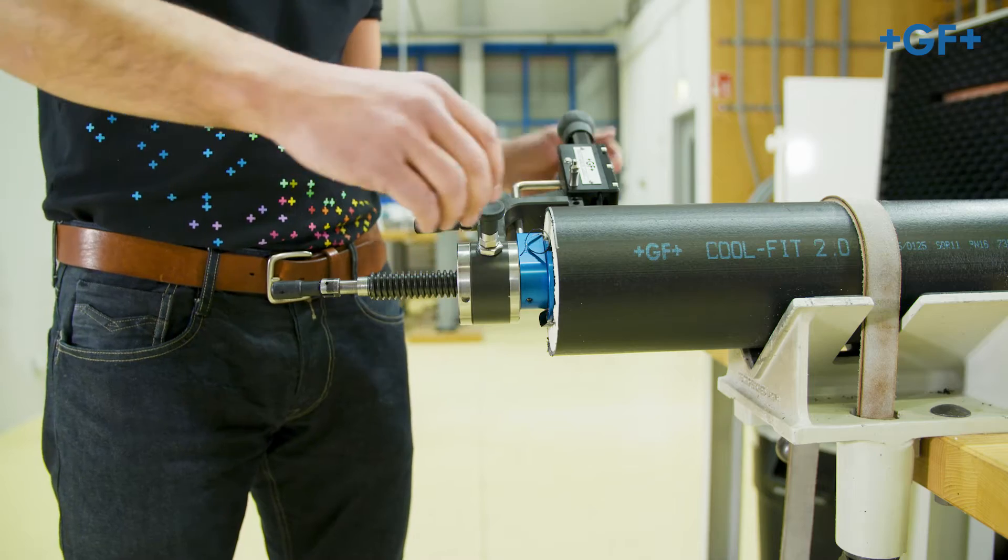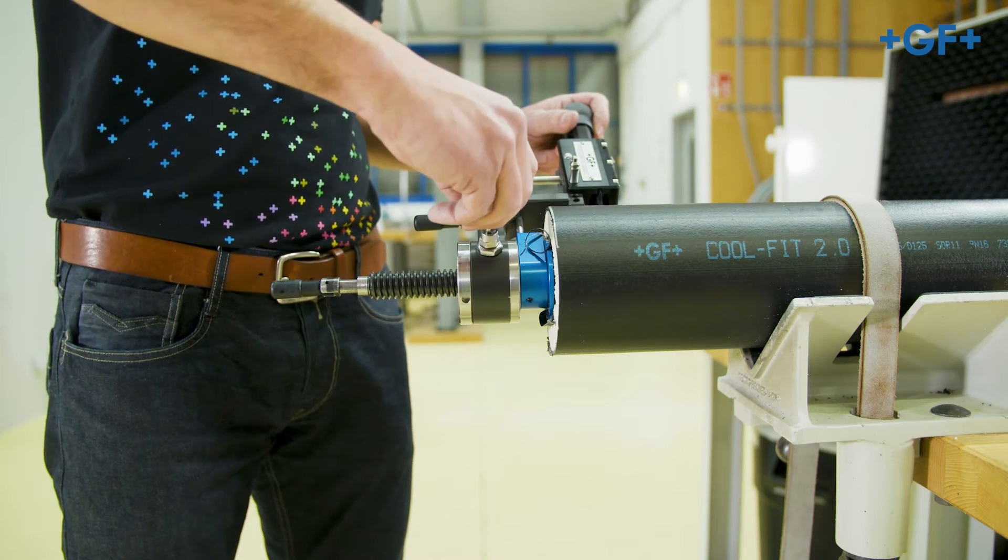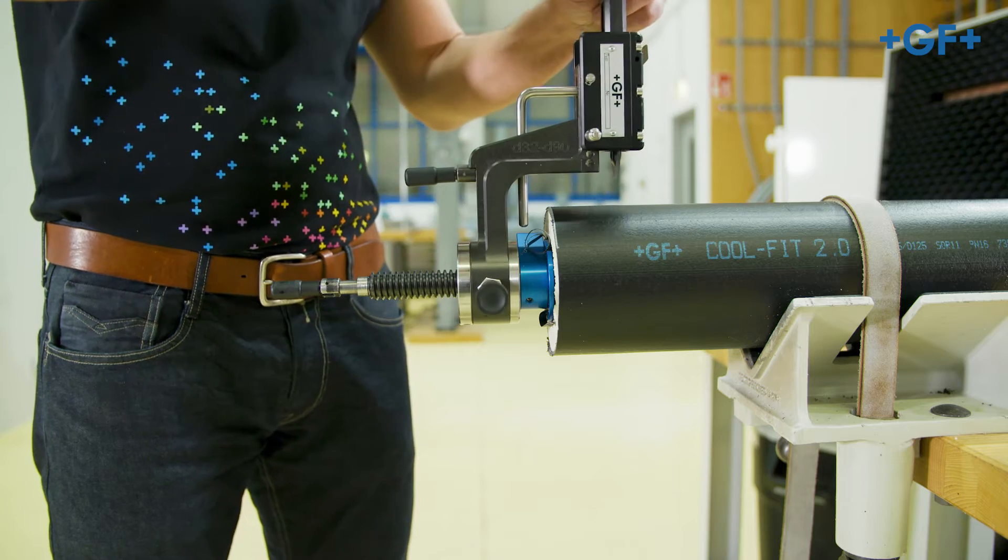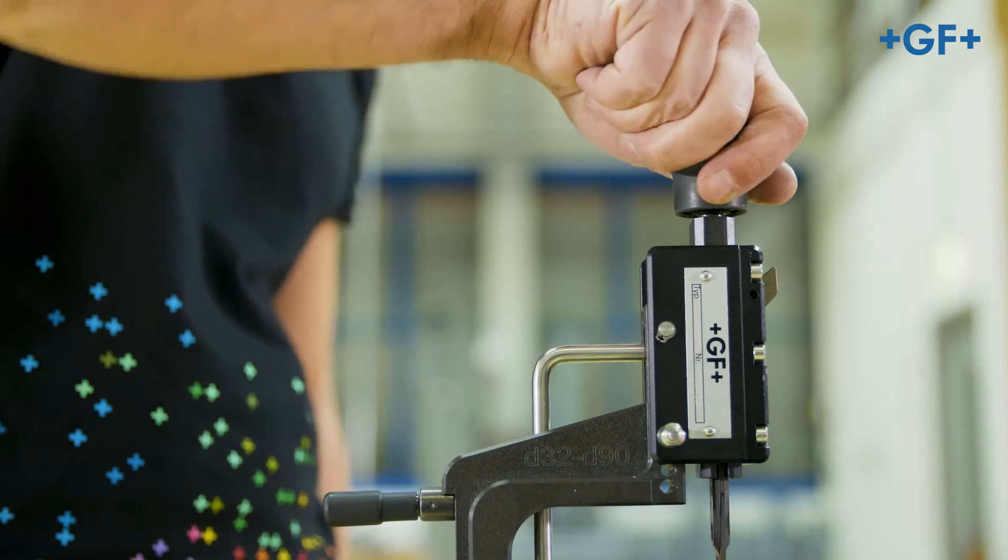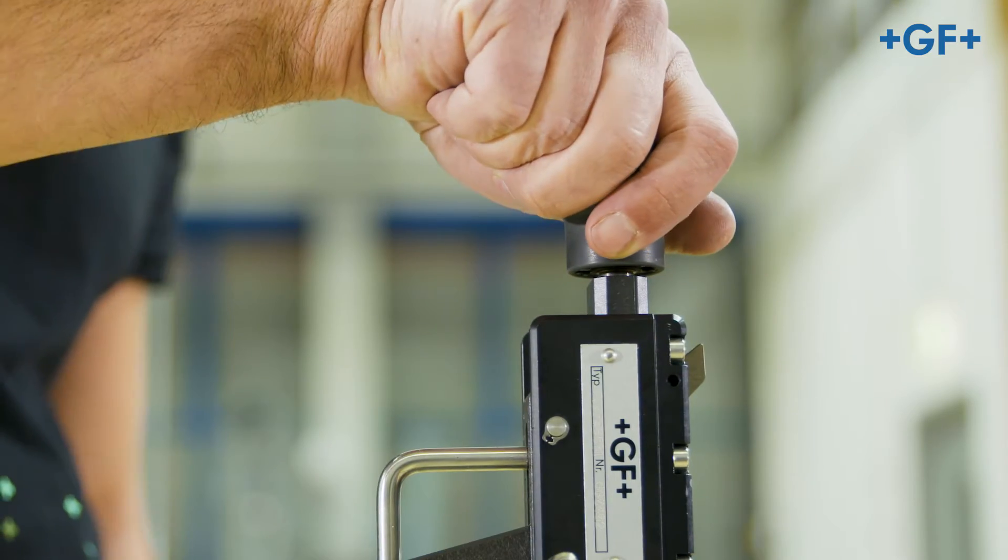Release the locking pin by pulling and turning 90 degrees. Push the circular blade device onto the CoolFit pipe and move it forward by turning the lever clockwise one to two times.